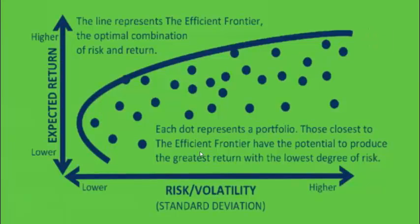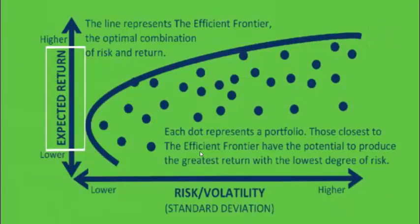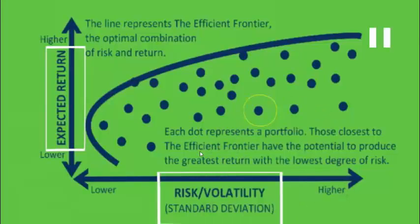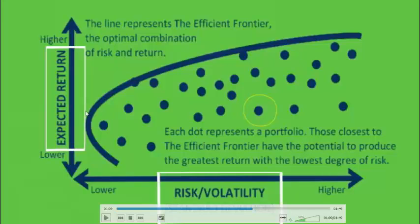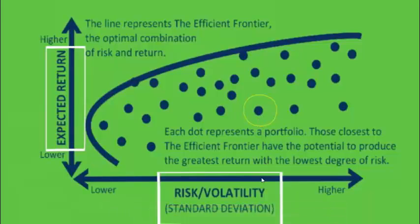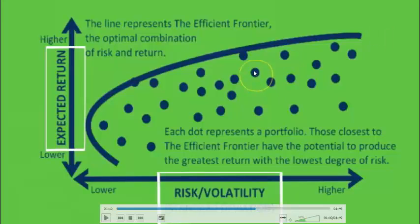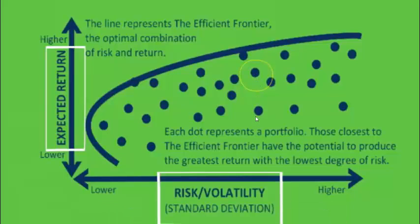On the efficient frontier, the Y axis represents the expected return and the X axis represents the risk or volatility, denoted by standard deviation. As you can see, when I move from one portfolio to another, my return increases to a greater extent while the risk shows no change. Moving further toward the efficient frontier, the return continues to increase while the risk remains the same.